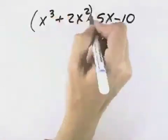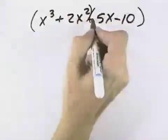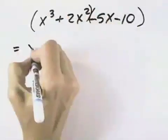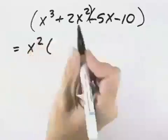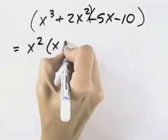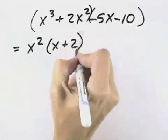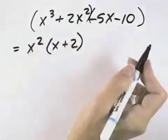I'll group the first two terms and the last two terms together. When I do that, I can see the common factor of x squared in my first two terms, which when I divide out leaves me x plus 2 when I divide an x squared out of each of those terms.